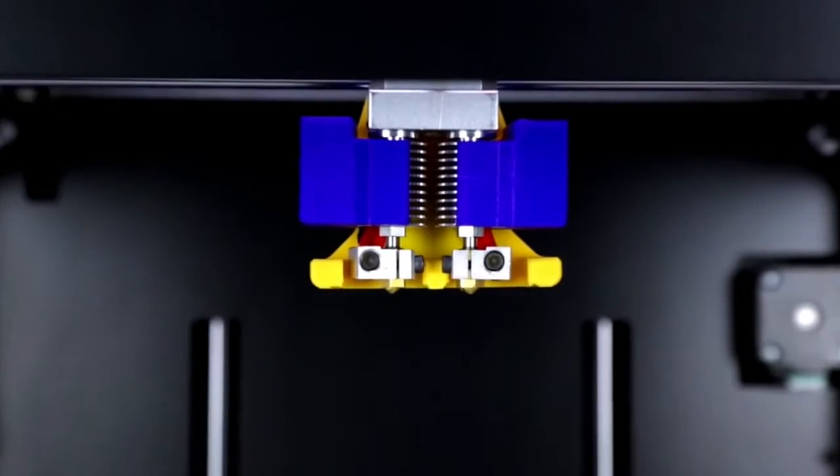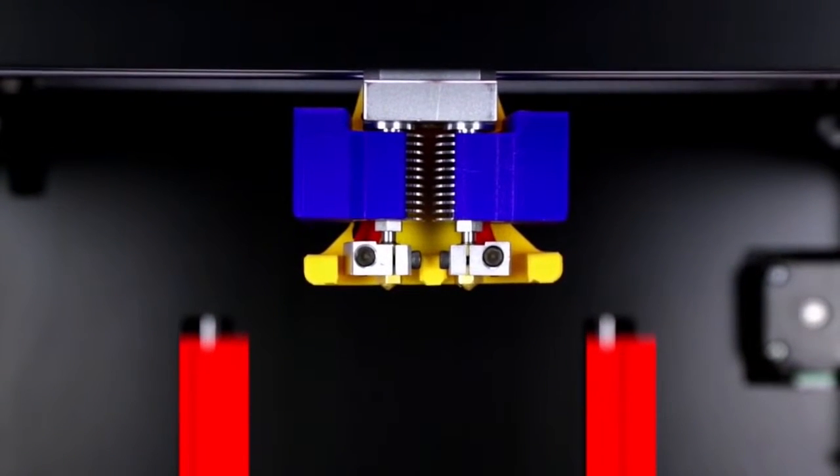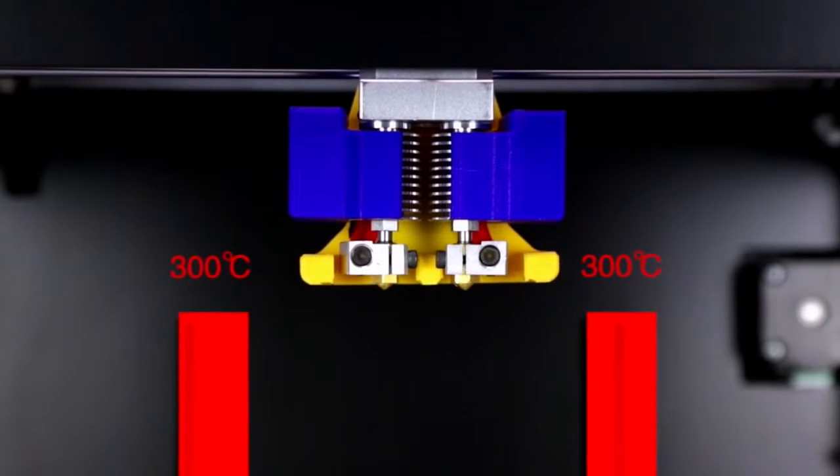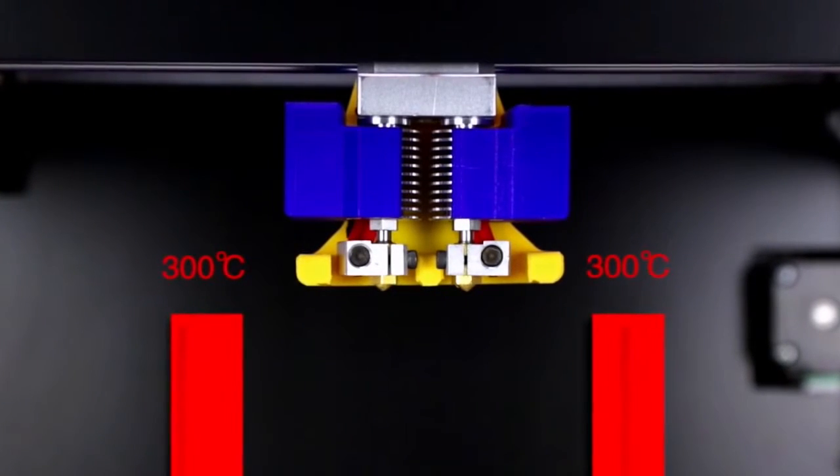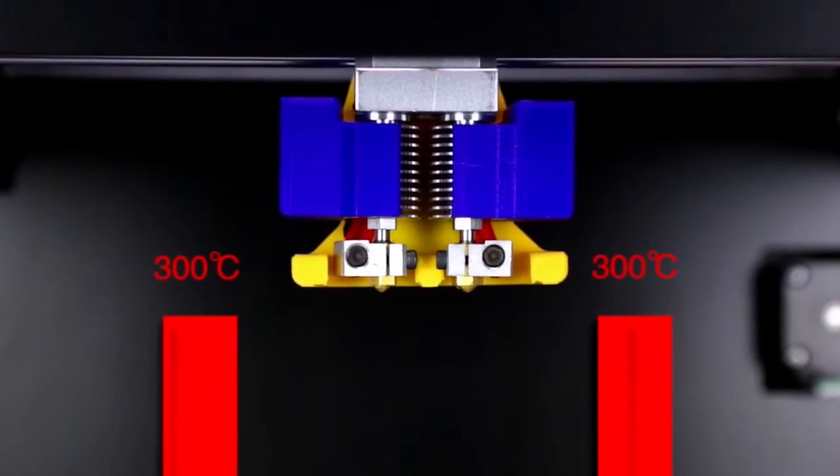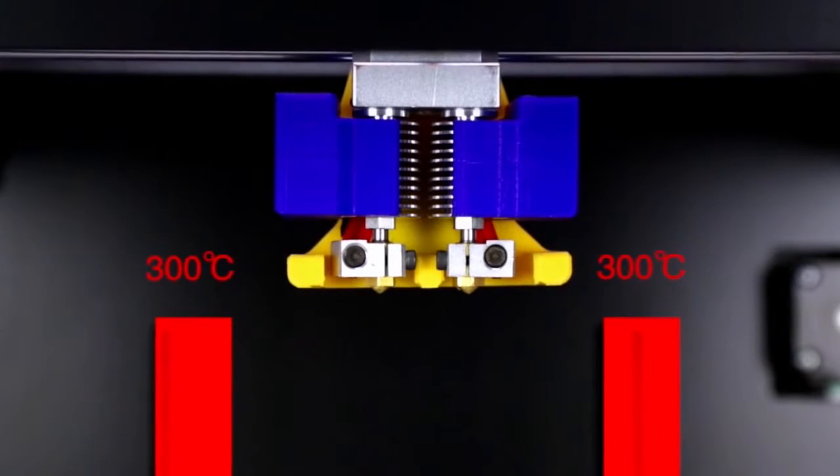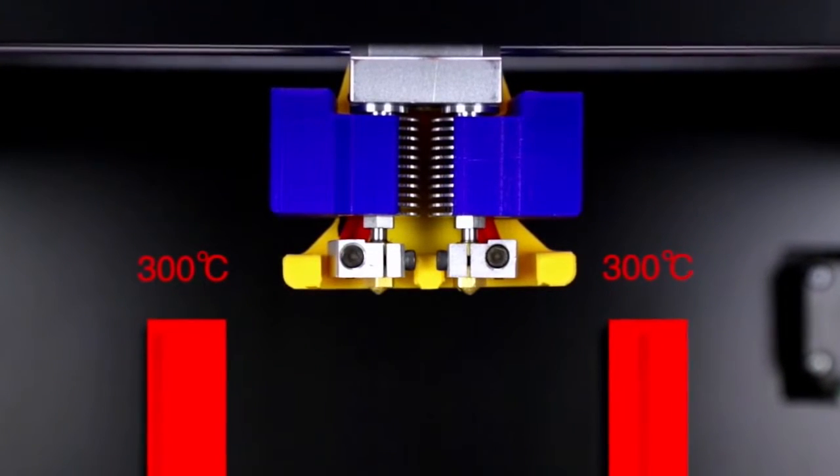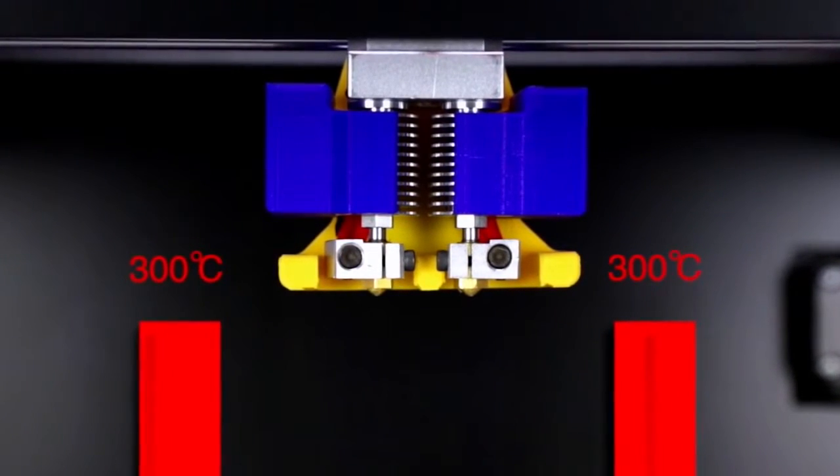Meanwhile, the extruders can heat up to 300 degrees centigrade. In terms of 3D printing, every kind of filament has a certain melting point. Therefore, 300 degrees centigrade means the printer can use a wide range of filaments.